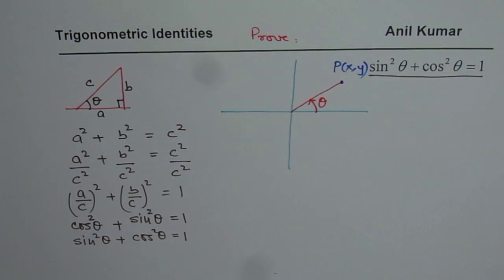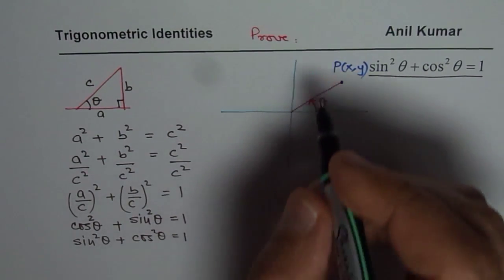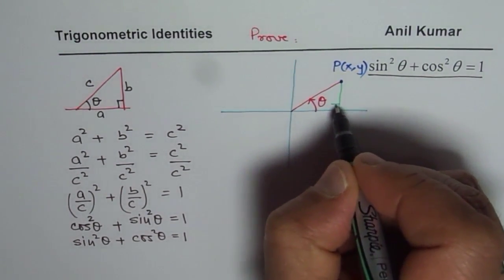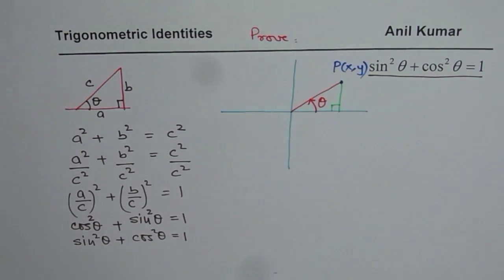Now, let me show you how to prove this identity by taking a point on a coordinate system. So if I have a point on a coordinate system like shown here, in that case, what I can do is, I can drop a perpendicular from this point on x-axis. So that's the perpendicular. So if I drop a perpendicular,